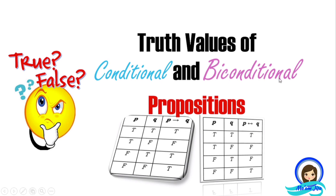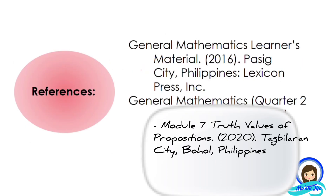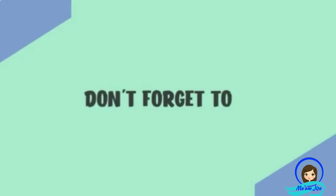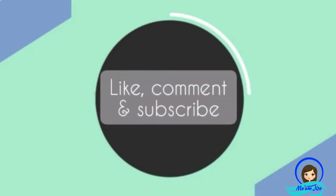That is all about the truth values of conditional and biconditional propositions. Remember: for conditional propositions, the implication is true in all cases except when the conclusion is false. For biconditional propositions, it is only true when both propositions have the same truth value. I hope you learned something from this discussion. In the next session, I will share the different forms of conditional propositions: the contrapositive, converse, and inverse. Goodbye everyone, and have a nice day. See you there!